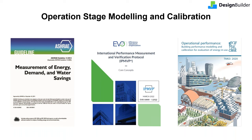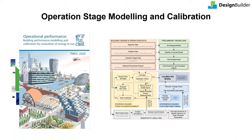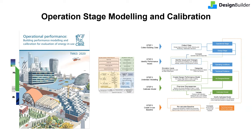These are complementary guidance documents. TM63 builds on the other two, specially regarding the use of model calibration as part of systematic post-occupancy performance evaluations. TM63 provides a procedural and replicable evidence-based methodology to develop a calibrated model which can be used for diagnosing performance issues. This calibrated model sits at the heart of a step-by-step measurement and verification framework to quantify and identify causes of building performance issues.